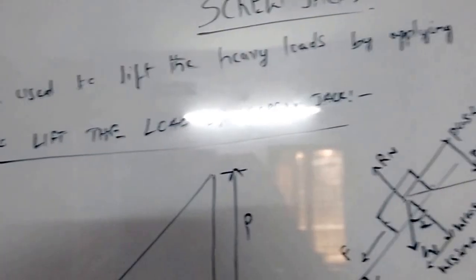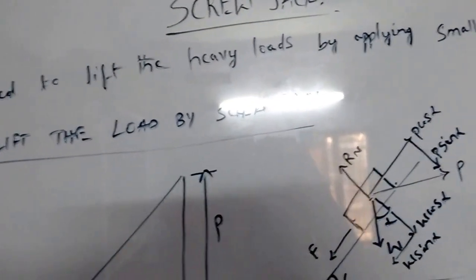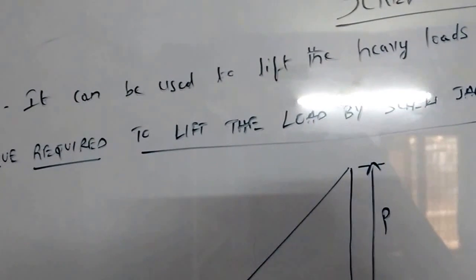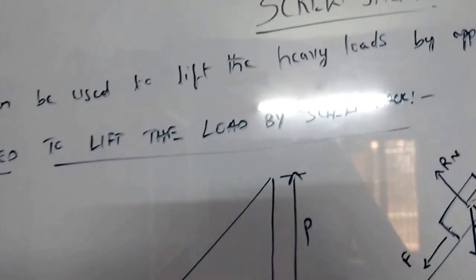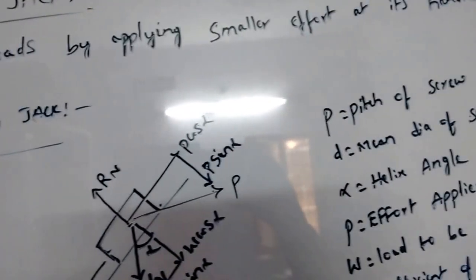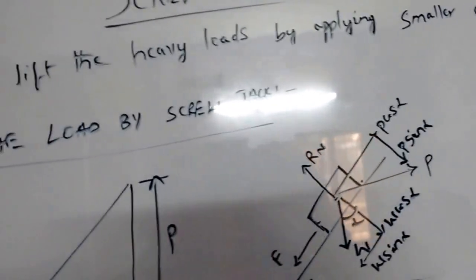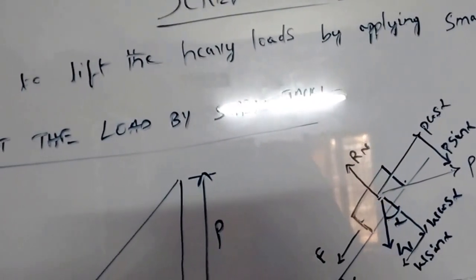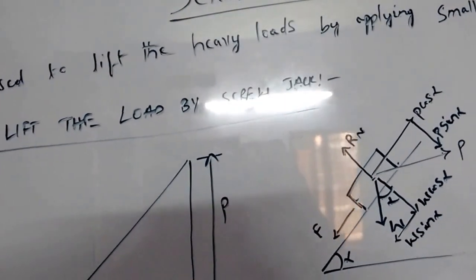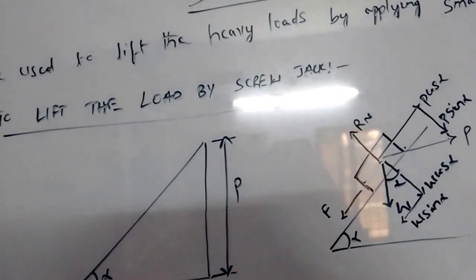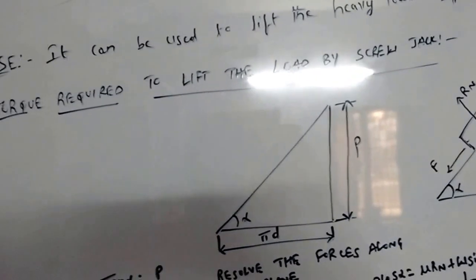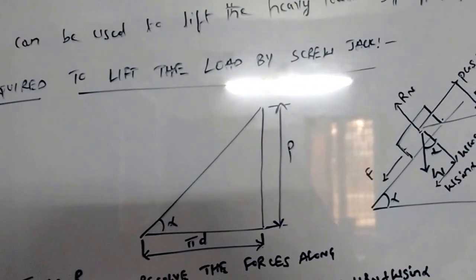Good morning friends. I would like to discuss something about a screw jack. The definition of a screw jack is: it is a device that can be used to lift heavy loads by applying smaller efforts at its handle. If you want to lift heavy loads with very less effort, you can use this device. This topic is especially relevant for public sector units and Indian Engineering Services examinations, which ask about the torque required to lift a load by a screw jack.